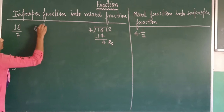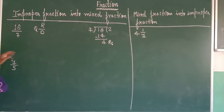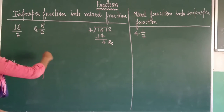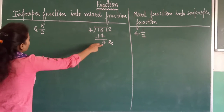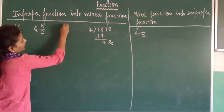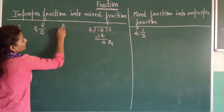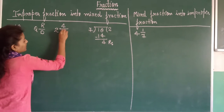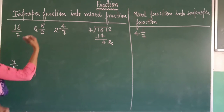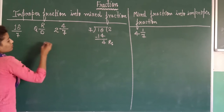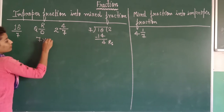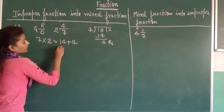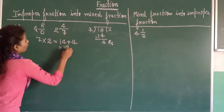Jab isko whole number form mein arrange karna hota hai to format hota hai: quotient, remainder upon divisor. Aap confused ho jaate ho ki remainder kahan likhna hai aur quotient kahan — to yaad rakhiye: remainder numerator place par likhte hain. Aapka quotient aya 2, divisor hai 7. Check karne ke liye: 7 times 2 = 14, aur 14 mein 4 add karo to milega 18, denominator as it is — yaani 18 upon 7.